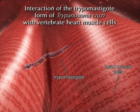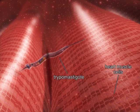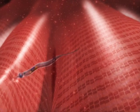Interaction of the Trypomastigote form of Trypanosoma cruzi with vertebrate heart muscle cells. In this example, the attachment of the Trypomastigote form to the surface of heart muscle cells is observed.